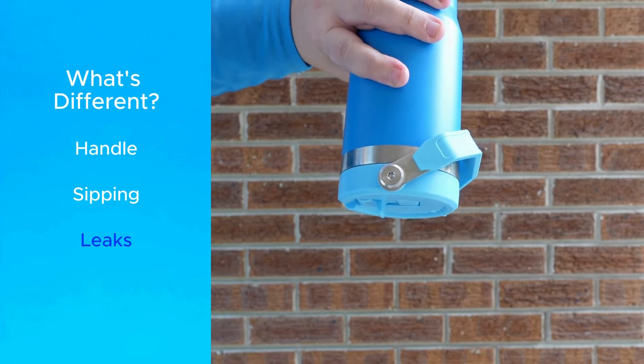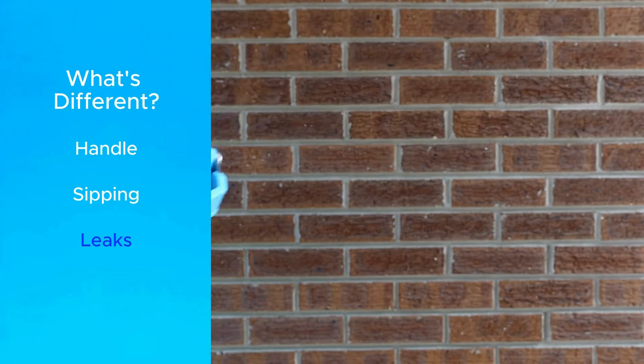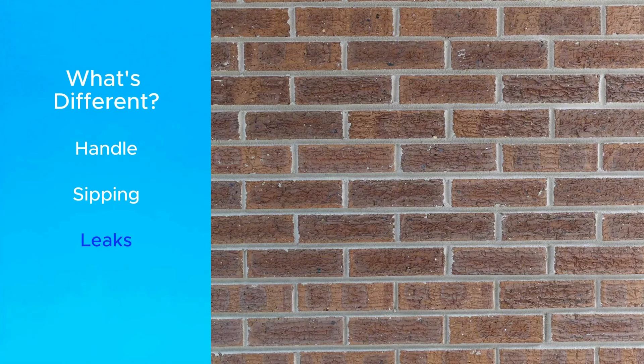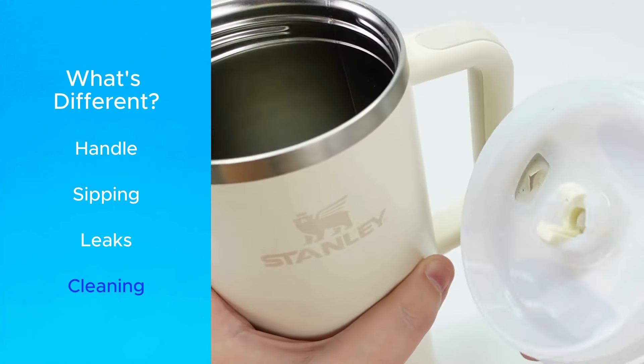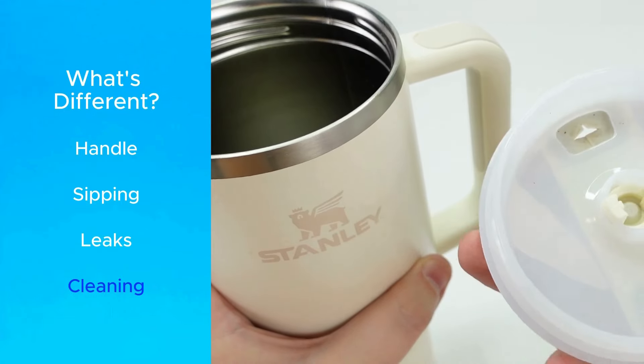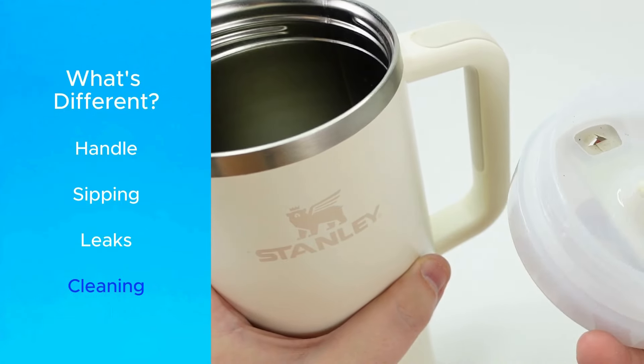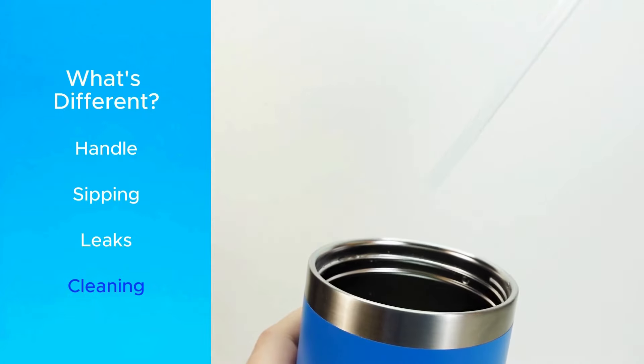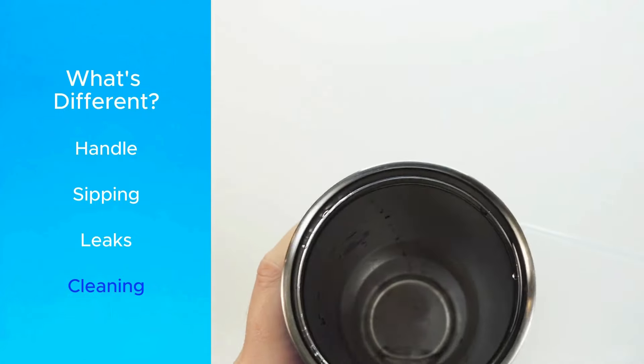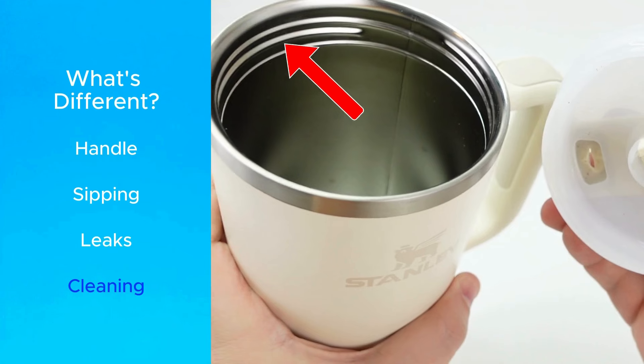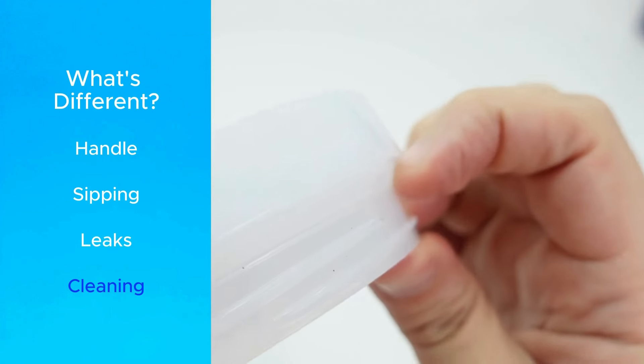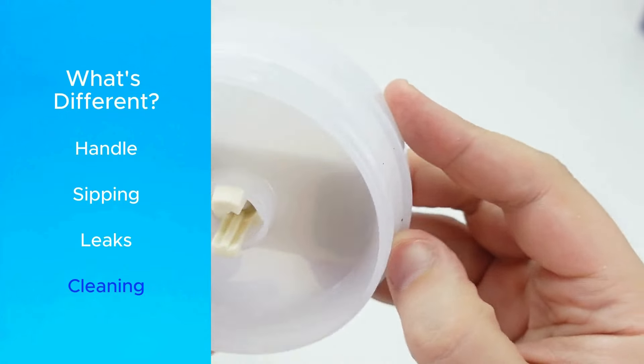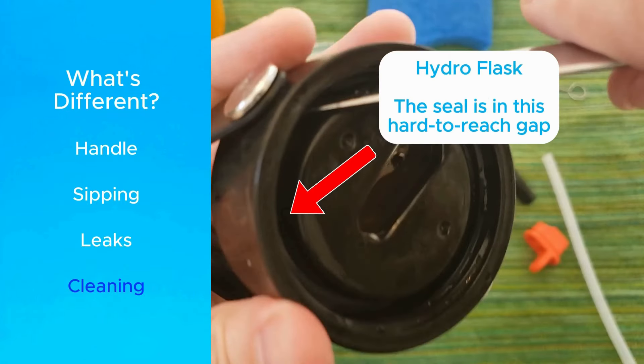But while the Iceflow solves the leaking problem, this creates another major drawback that leads into the fourth difference, how easy they are to clean. The good news is that Quencher and Iceflow are both dishwasher safe. And if you prefer handwashing like me, they're both very wide on top so you can clean it with just a sponge instead of needing a brush. They also have internal threads on the bottle, so the seal between the lid and the bottle is on the outside of the lid, making it easier to remove and clean compared to a bottle like Hydroflask.